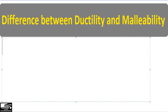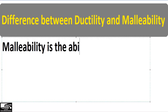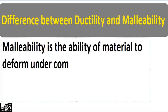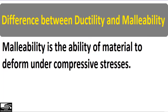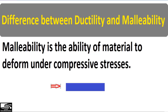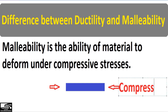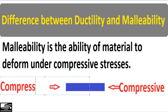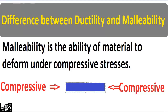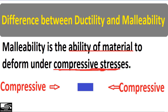Malleability is the ability of a material to deform under compressive stresses — it is the opposite of ductility. In this case, consider a material where compressive stresses are acting on it. Unlike ductility where tensile stresses stretch the material, here the compressive stresses compress the material. This ability of a material to deform under compressive stresses is called malleability.